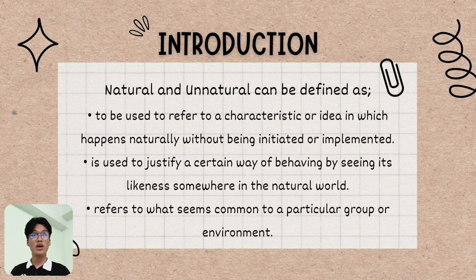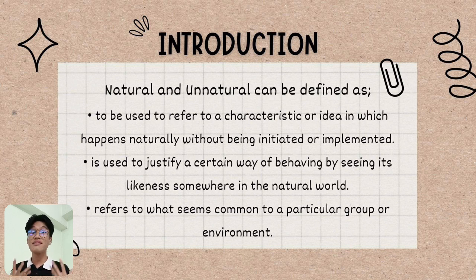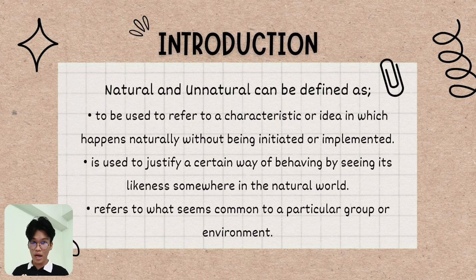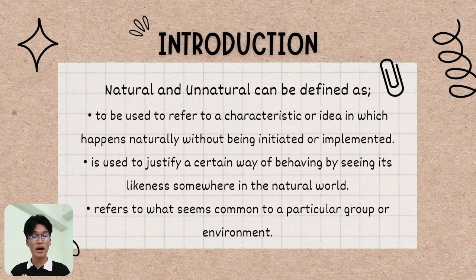For example, when a grown woman reaches maturity, she can naturally experience menstruation. That's natural — it doesn't mean you have to be told to do it; it simply happens during puberty. That is the first definition of natural.